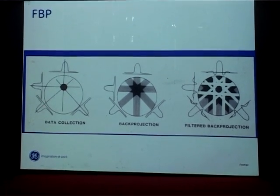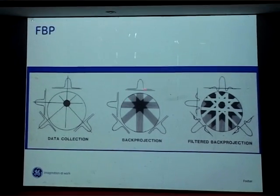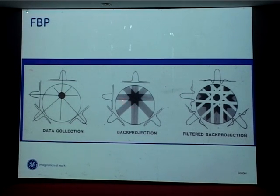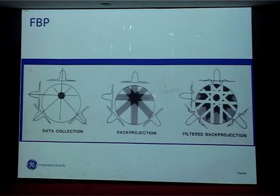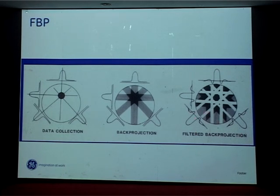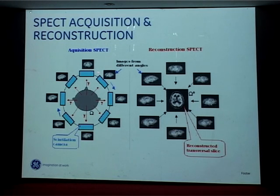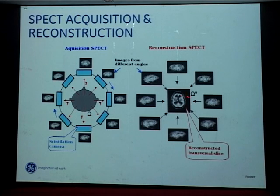Image reconstruction shows how activity is distributed in a particular organ. Simple back projection gives a distribution but produces a star artifact that degrades the image. That is why filtered back projection is used — applying a filter to cut out the noise and obtain a better image of the activity distribution. The camera rotates at various angles over the patient and the image is reconstructed; this example shows a brain image.